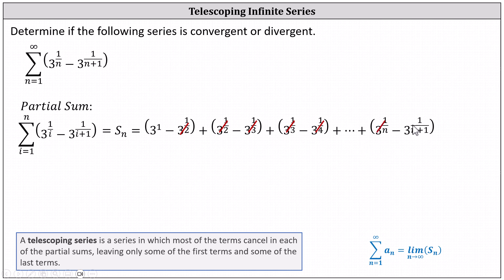So now we have a formula for the partial sum S sub n. S sub n equals 3 minus 3 to the power of 1 divided by the quantity n plus 1.